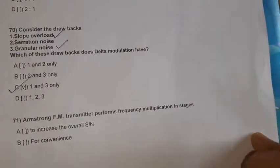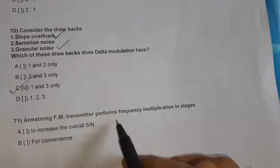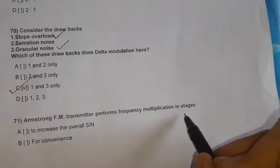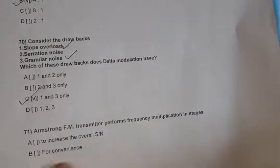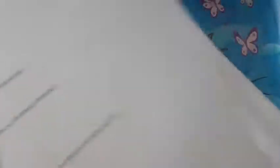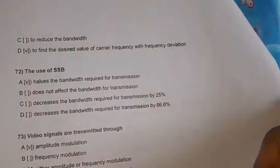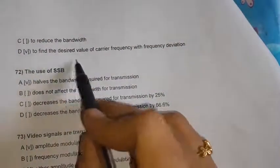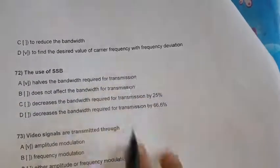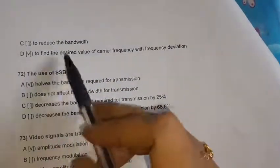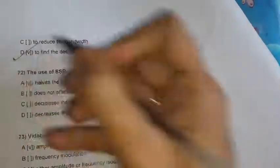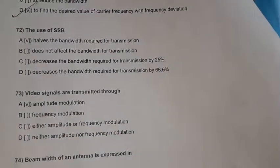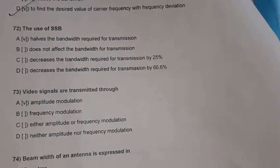Question 71: Armstrong FM transmitter performs frequency multiplication in stages to find the desired value of carrier frequency with frequency deviation. Option D is the right option. Question 72: The use of SSB — generally SSB halves the bandwidth required for transmission.